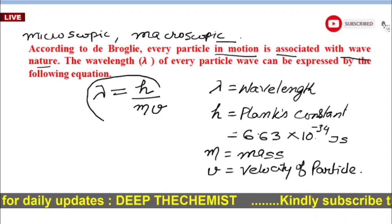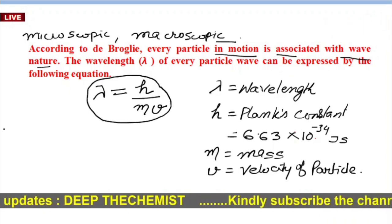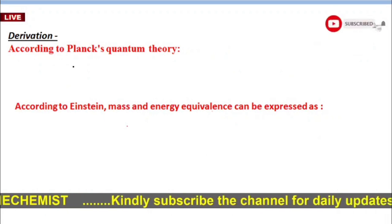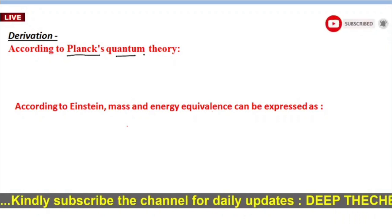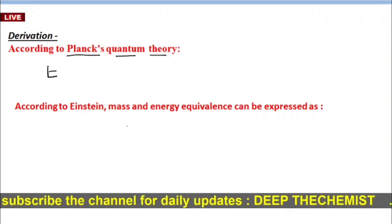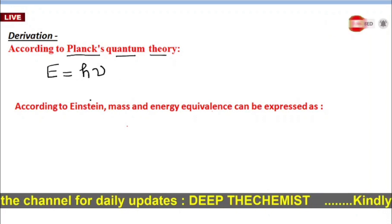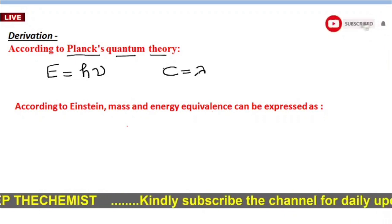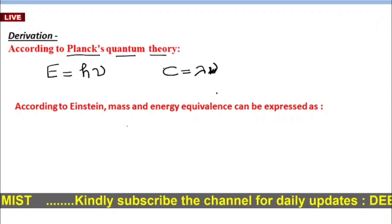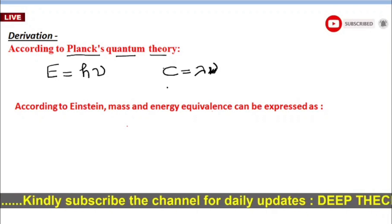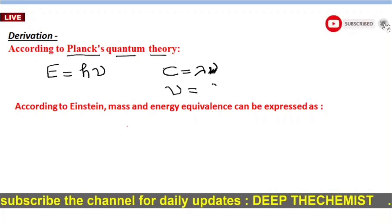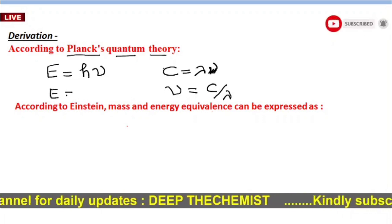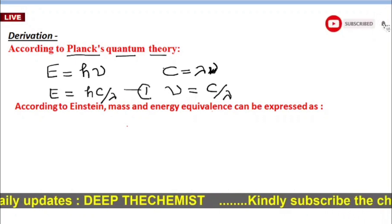We will derive this equation. De Broglie correlated two characters in the form of an equation. We know that according to Planck's quantum theory, E is equal to hν. We also know that the velocity of light c is equal to lambda times nu, where nu is frequency and lambda is wavelength of the photon. So nu equals c upon lambda, giving us E equal to hc upon lambda — let this be equation 1.